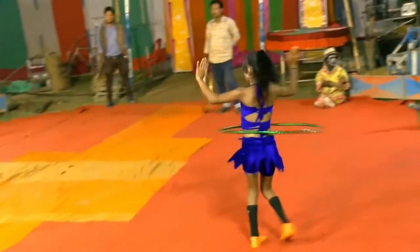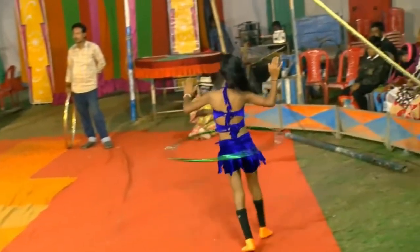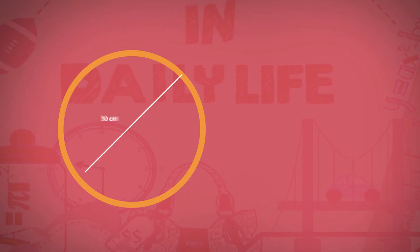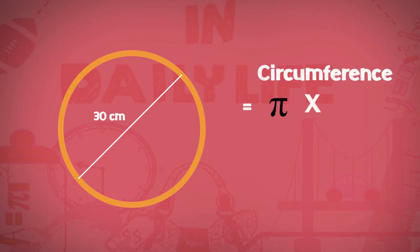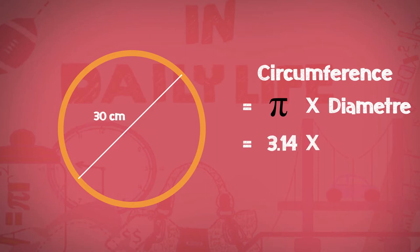Let's understand this by taking a circus ring. Let's assume that this has a constant diameter of 30 cm. We can easily find out the circumference of the ring using circumference equals pi multiplied by diameter. In this case, 3.14 multiplied by 30, that is 90.4 cm.